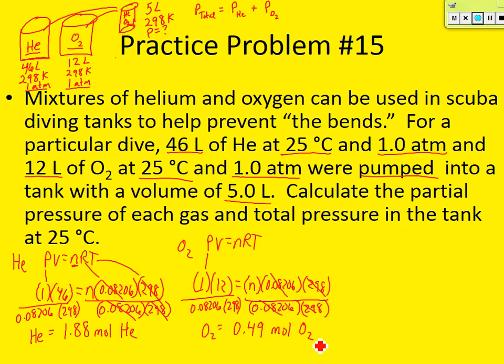So now that we have how much we actually put into this scuba diving tank, can I solve for the pressure of those individual gases using the ideal gas law inside this tank? Yes. So PV = nRT. We don't know the pressure inside the tank. The volume of the tank is 5 liters. The number of moles we put in of helium is 1.88. R is 0.08206. And temperature is 298 Kelvin. We have everything we need.